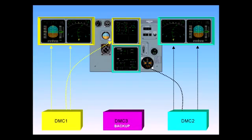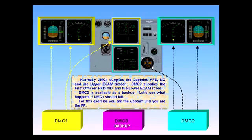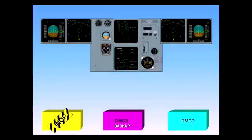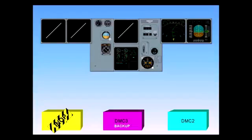Let's see what happens if DMC-1 should fail. For this exercise, you are the captain and you are the pilot flying. When DMC-1 fails, the captain's PFD and ND are lost, along with the upper ECAM screen. Since you no longer have any information to safely fly the aircraft, you should hand over control to the first officer. You are now the pilot not flying.